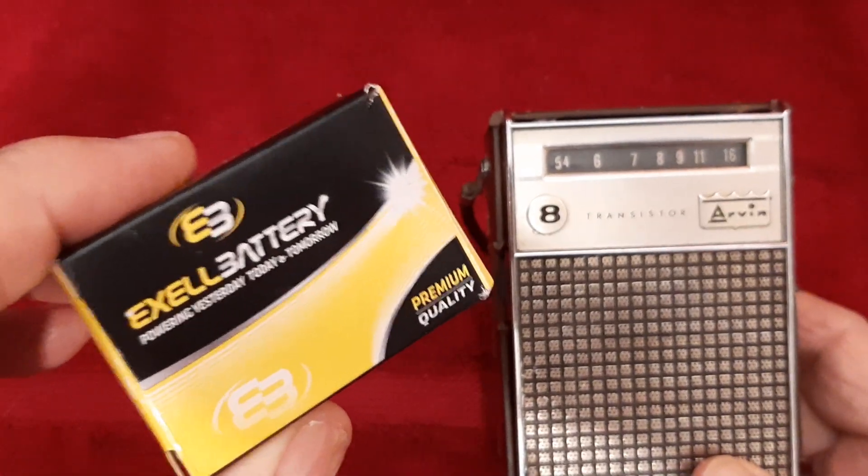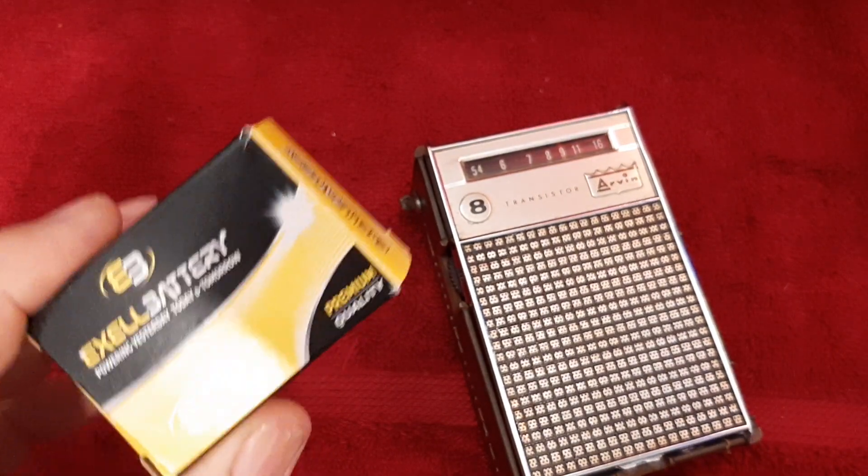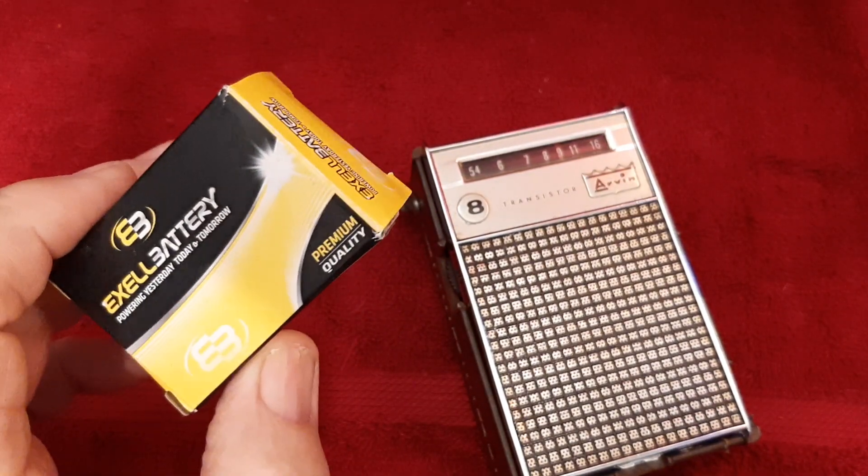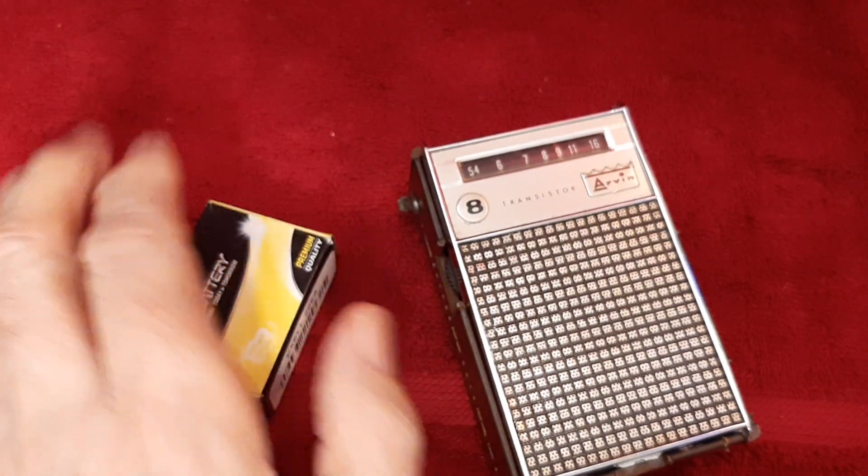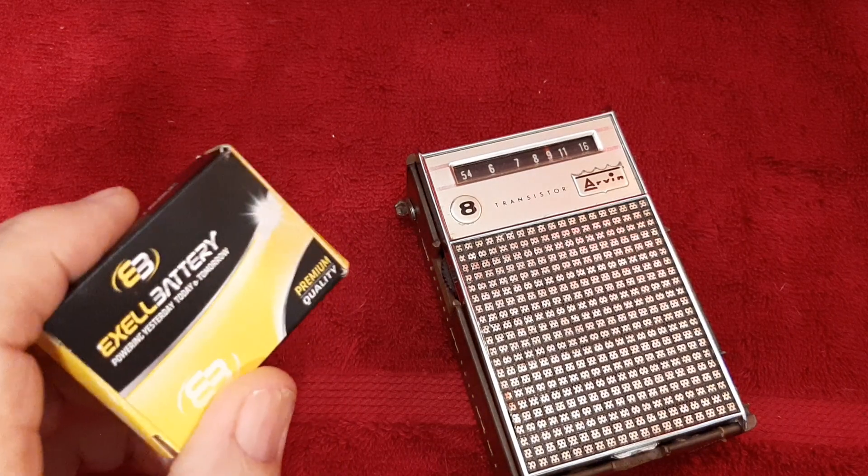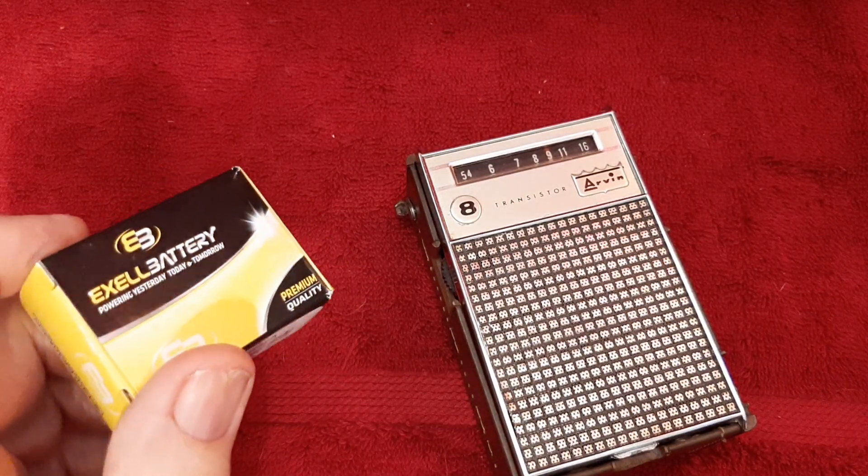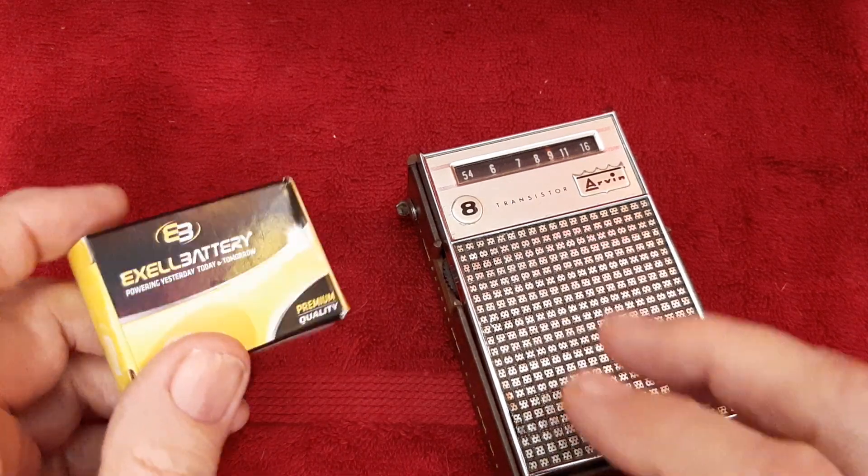There it is right there. This is a 9-volt tubular battery. Jeff paid $5 for the radio and $19, including shipping, for the battery. $19 for the battery. So, I'm going to try to install that battery for you right now.